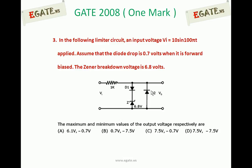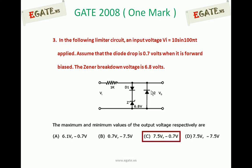We are going to calculate the maximum and minimum output voltage ranges. Looking at the circuit diagram, the Zener breakdown voltage is 6.8V, the diode forward bias voltage is 0.7V, and input voltage is 10 sin(ωt). The correct answer for this question is C: positive maximum is 7.5V and negative maximum is -0.7V.